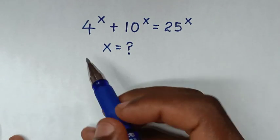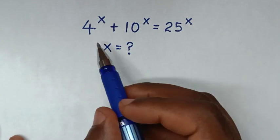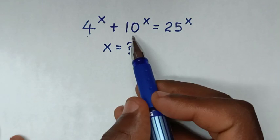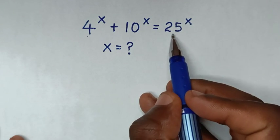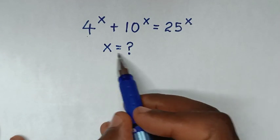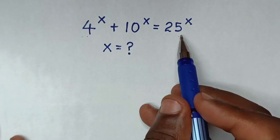Hello, you are welcome to solve this math problem, which is 4 power of x plus 10 power of x is equal to 25 power of x. We need to find the value of x from this equation.